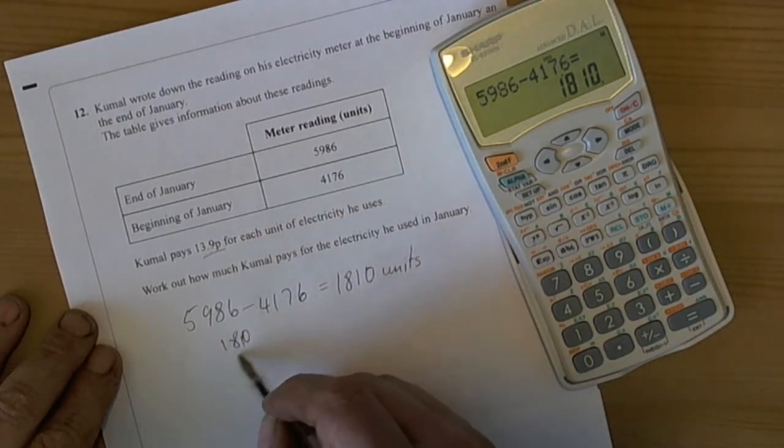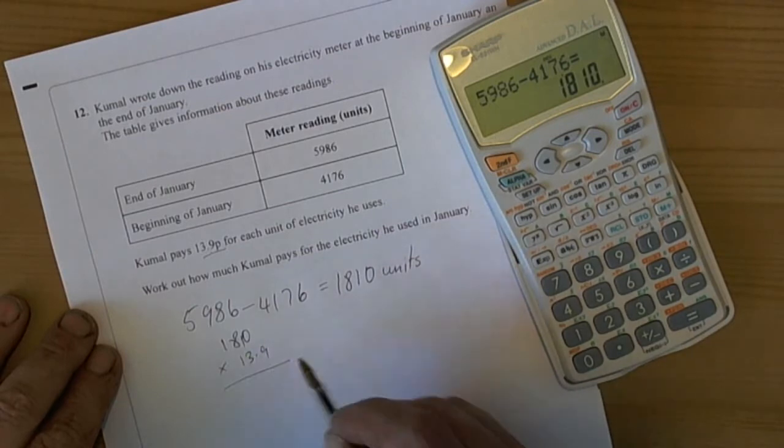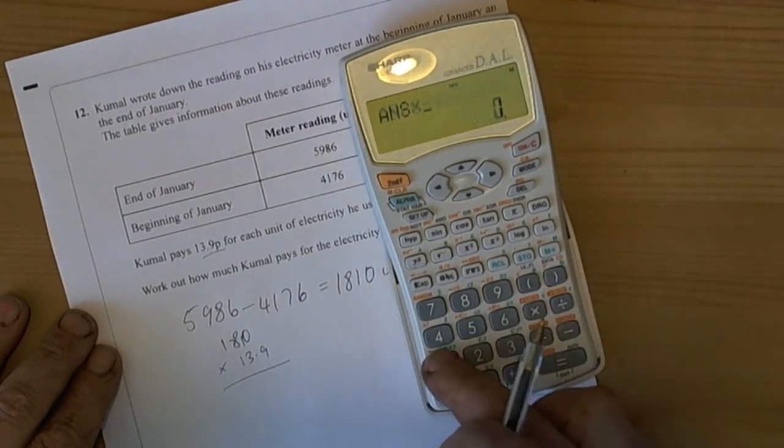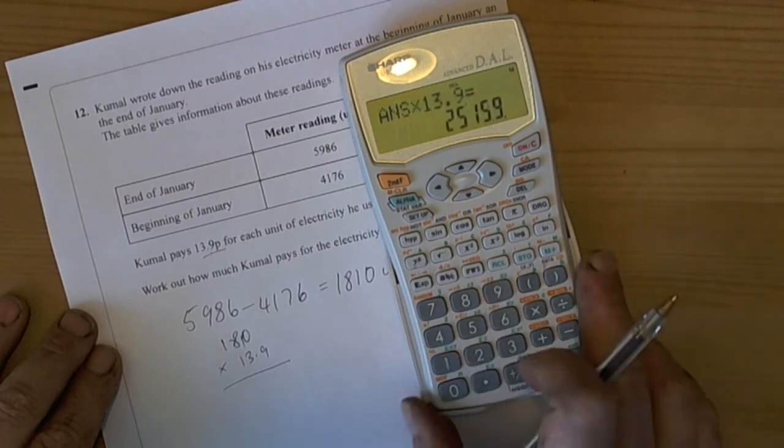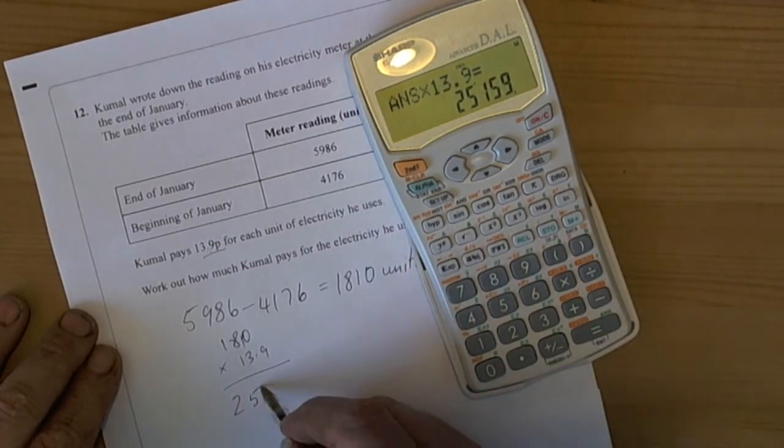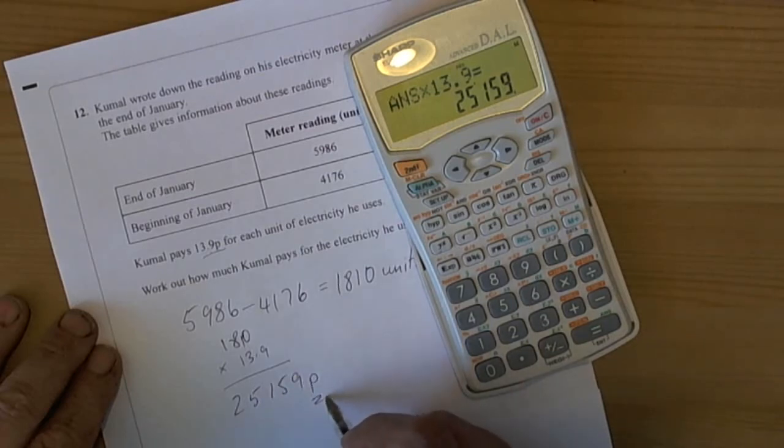1,810 times 13.9 equals 25,159p. Be really careful that we use the correct units—this is in pence. Although when you pay a bill, you would actually do it in pounds.